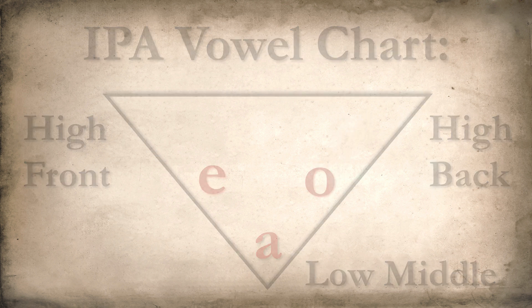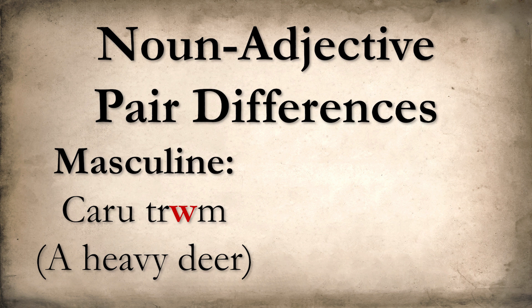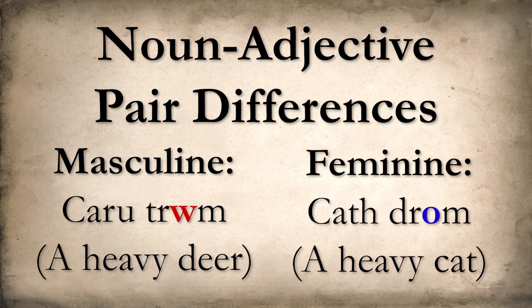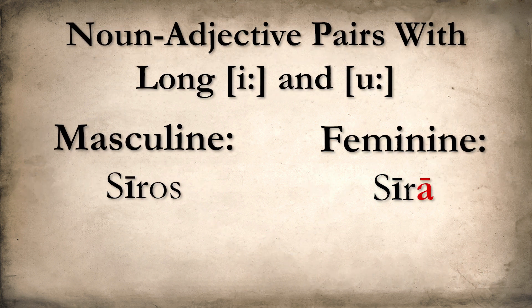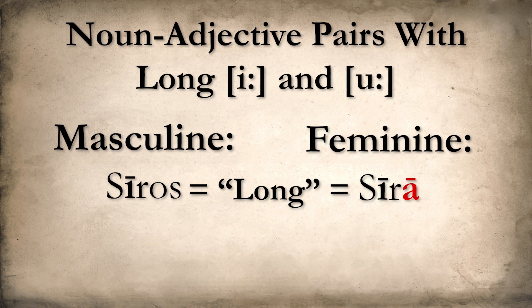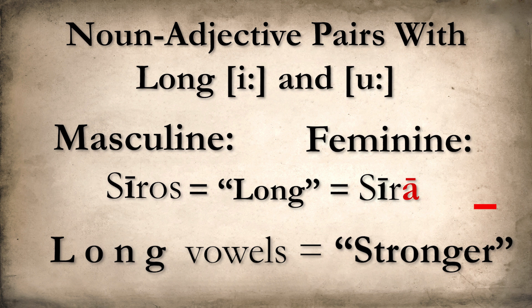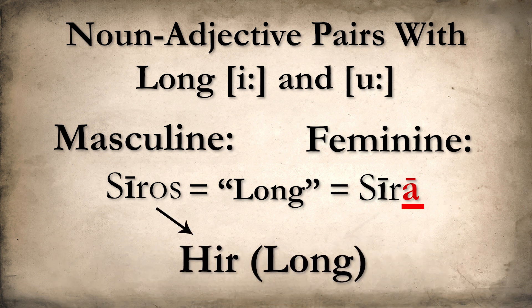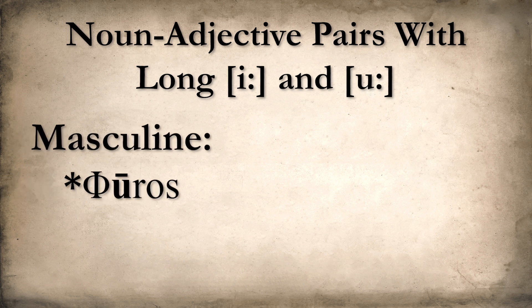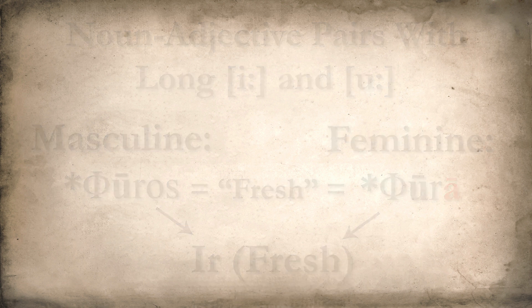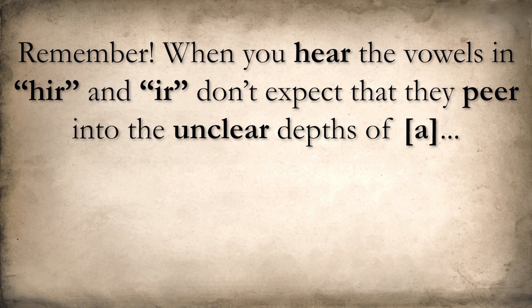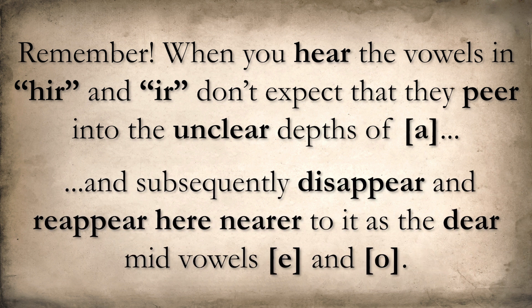The same thing happened with short U, as in the masculine and feminine noun-adjective pair 'karu throom', a heavy deer, but 'koth dhrom', a heavy cat. It should be noted that A-affection only had an impact on short I and U. So forms like 'syros' and 'syra', meaning 'long', weren't impacted by the change — this is probably because the vowels are a bit stronger and less likely to be influenced by A. Their modern forms are both 'hir', for the masculine and feminine variants. Likewise, 'puros' and 'pura', meaning 'fresh', weren't affected either — their modern forms in Welsh are both 'hir'. Remember, when you hear the vowels in 'hir' and 'hir', don't expect that they peer into the unclear depths of A and subsequently disappear — as the deer mid-vowels E and O do. Is that poetry? Do I get an award?